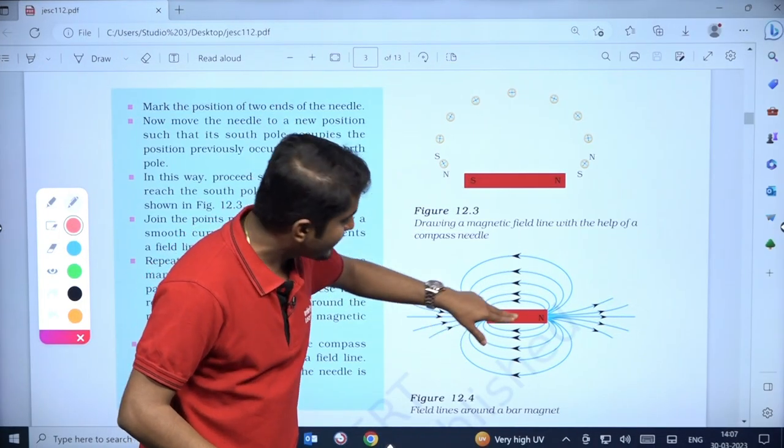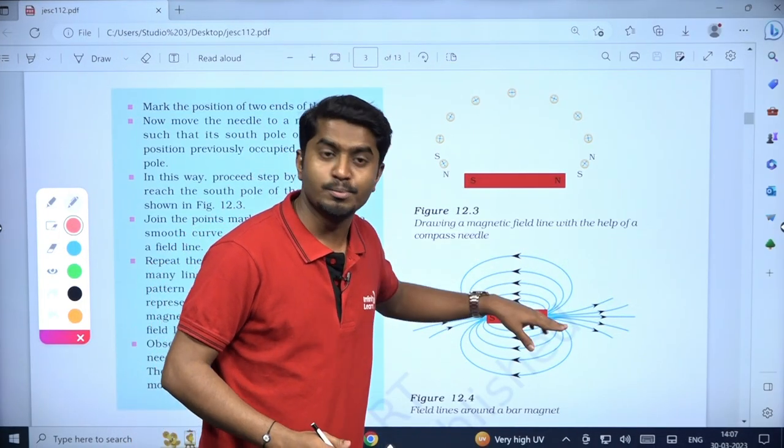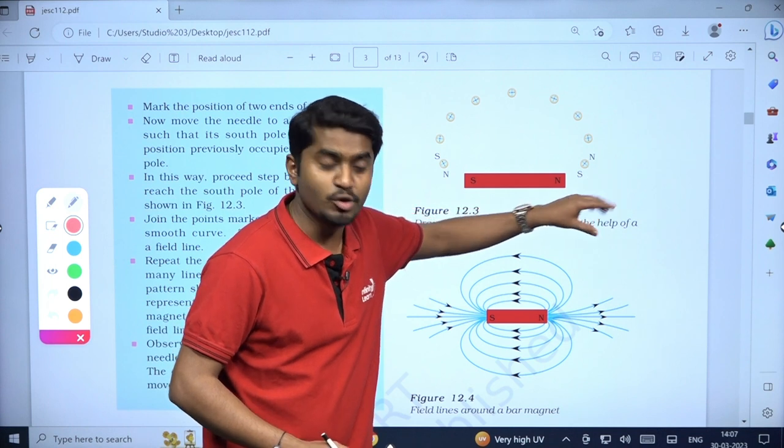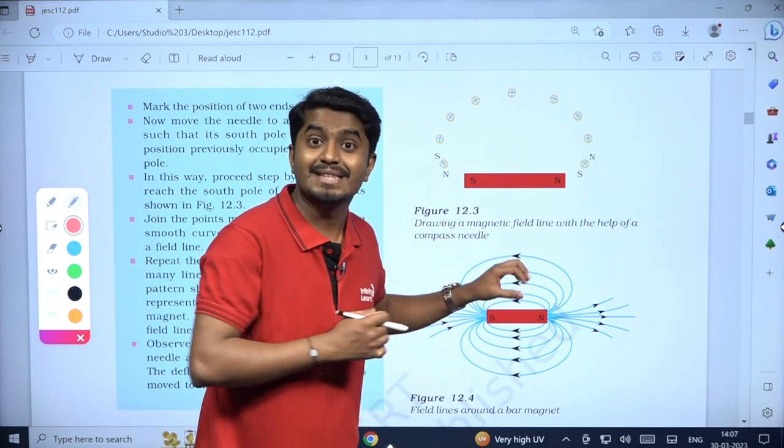You see these lines? They are going out from the north pole, all of them coming out from the north pole, and they are going inside the south pole. Are we clear? Class ready to raid the south pole?